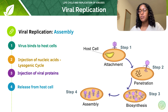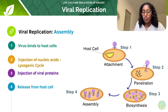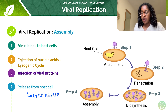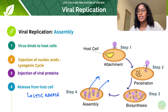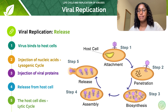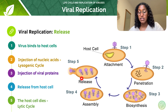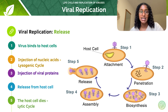Once the host cell has produced a sizeable number of viral particles, the viral particles will burst through the cell through a process called lytic release. You can see here that the virus is now replicated, assembled, and ejected from the host cell through lytic release. Once they burst through the cell, the viruses will go on to infect other host cells. Meanwhile, the original host cell is now dead because the virus has hijacked its cellular machinery and also burst out of it.